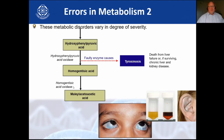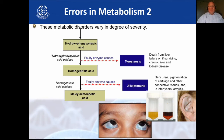If homogentisic acid oxidase is faulty — unable to convert homogentisic acid into maleylacetoacetic acid — you get alkaptonuria: dark urine, pigmentation of the cartilage so your ears and nose cartilage turn blue, and other connective tissue issues, and later in life you get arthritis. You can see the blue collagen in the eye. Last year I actually had a student who had this condition.